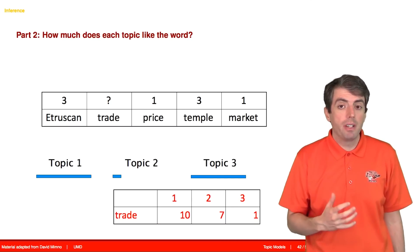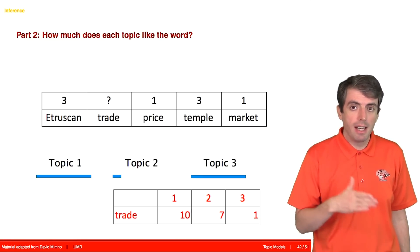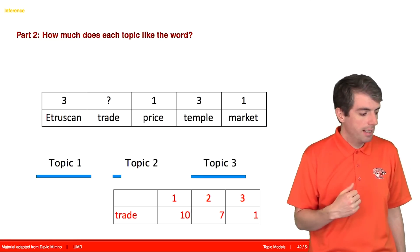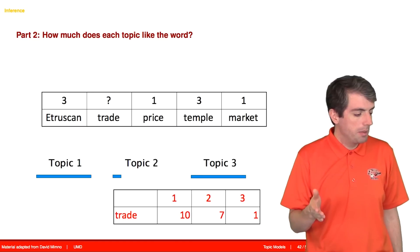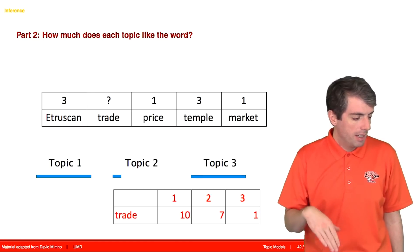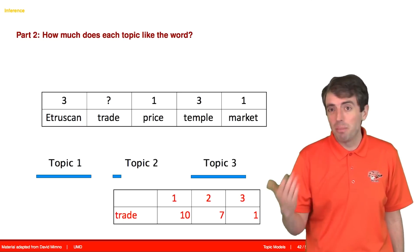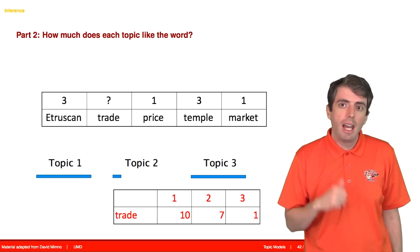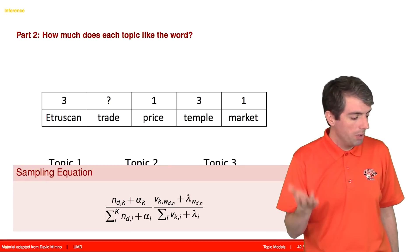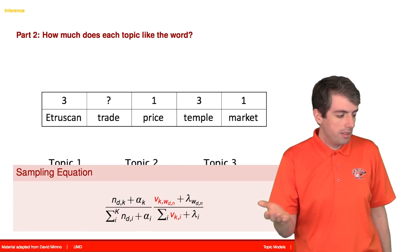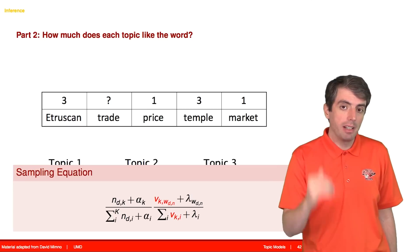The second part of the equation is how much each topic likes the word trade. And so trade has been used a lot in topic 1, a little bit in topic 2, and barely at all in topic 3. And we're going to multiply these two terms together.